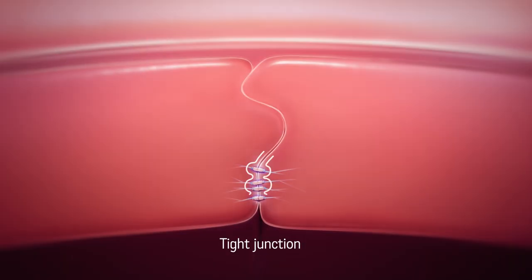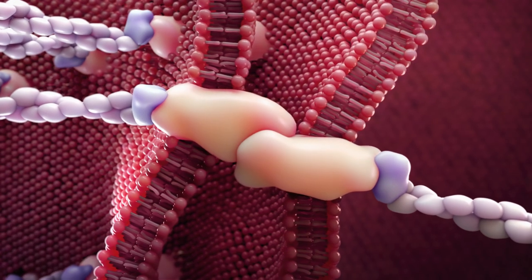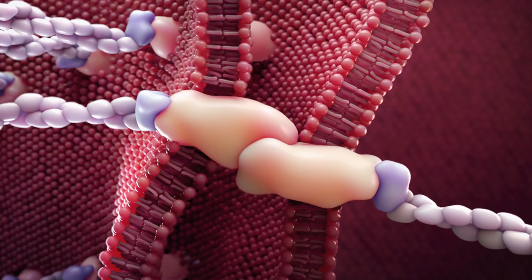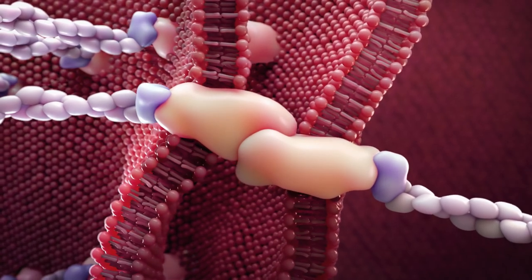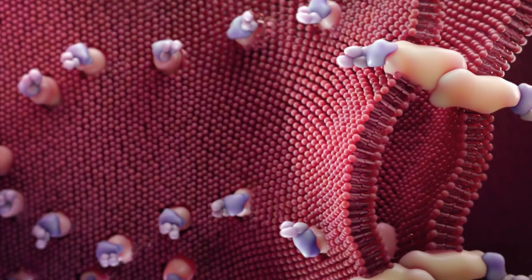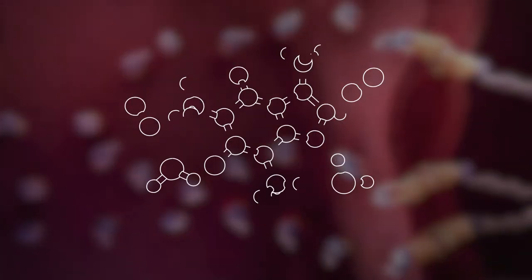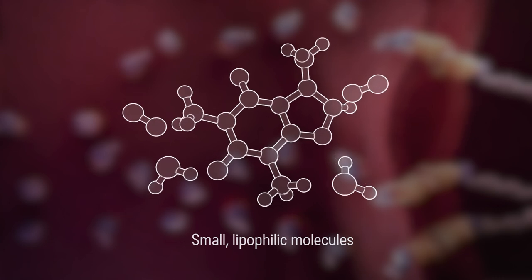Tight junctions tether the endothelial cells together and contribute to the restrictive properties of the barrier. These junctions are formed by complexes of transmembrane proteins that bind adjacent cells together. These complexes are arranged in networks along the surface of endothelial cells, limiting permeability to small lipophilic molecules.